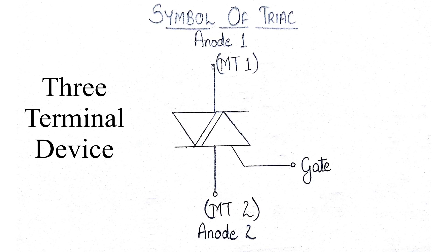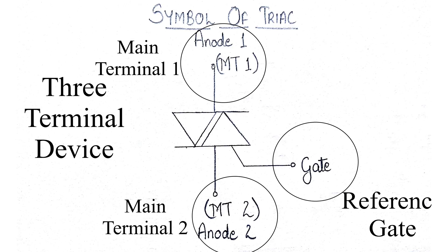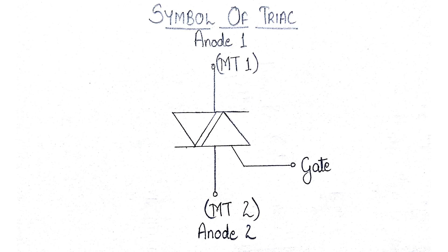The TRIAC symbol consists of three terminals: gate, anode, or main terminal. The two terminals are labeled as anode 1 or anode 2, main terminal MT1 or MT2. From the outside view, the symbol is viewed as a back-to-back thyristor, which we can observe in the symbol.